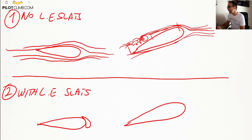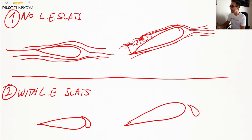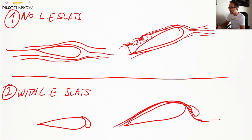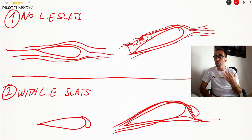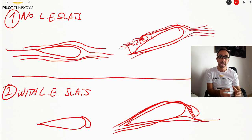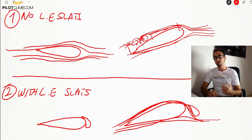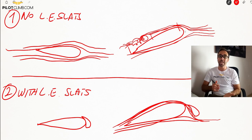By extending the leading edge slot, you are increasing the wing area and the camber of your wing. What will happen is that some airflow will come in here — you will create a slot that will accelerate the airflow and will allow the airflow to stay connected to the upper part of the wing surface. Thus, with the same angle of attack, if you extend your leading edge device — your leading edge slot — you won't stall compared to a wing that doesn't have the leading edge slot. So you can increase the angle of attack and fly at lower speed.